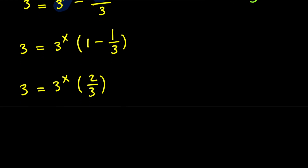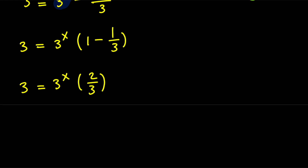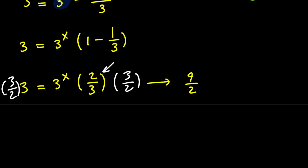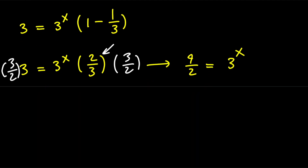Now, to isolate this 3 to the power of x, we need to get rid of this 2 thirds. So we need to multiply both sides by the reciprocal of this number, which is 3 halves. By doing that, I'm going to have 9 halves equals 3 to the power of x.